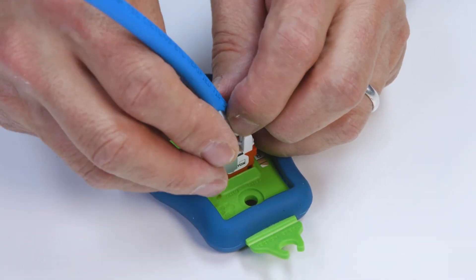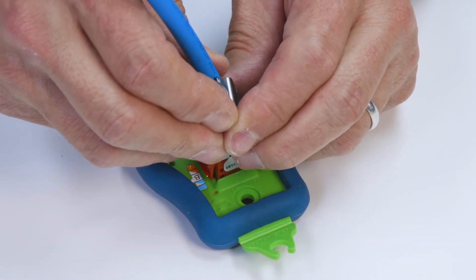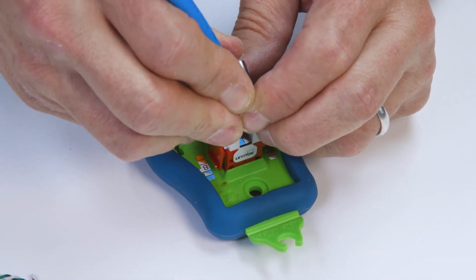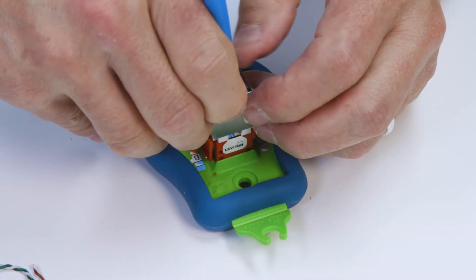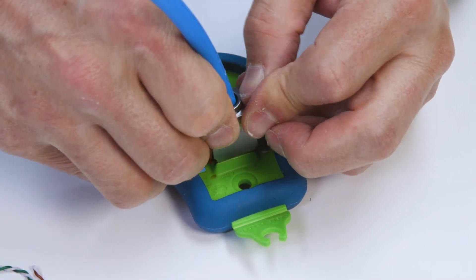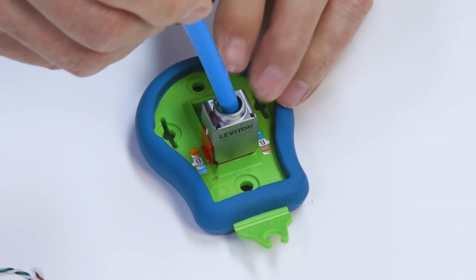If you're terminating a CAT 6A extreme jack, attach the cone of silence to the cable and slide it down onto the jack. The cone of silence helps to mitigate alien crosstalk and is included with all extreme CAT 6A jacks.